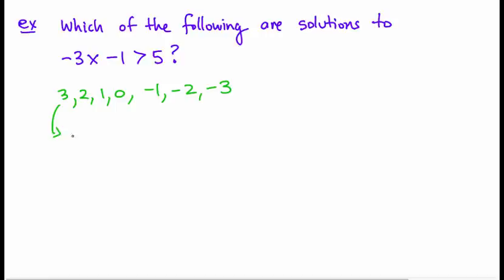So I'm going to start off by substituting in 3. So I have negative 3 times 3, take away 1, and is that greater than 5? So negative 3 times 3 is negative 9, take away 1, which is negative 10. And negative 10 is not greater than 5, so 3 is not a solution.